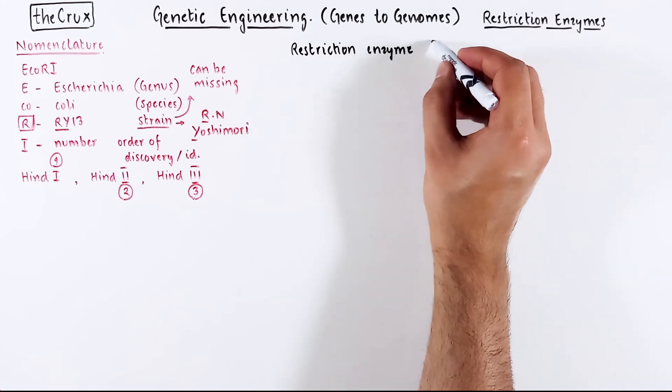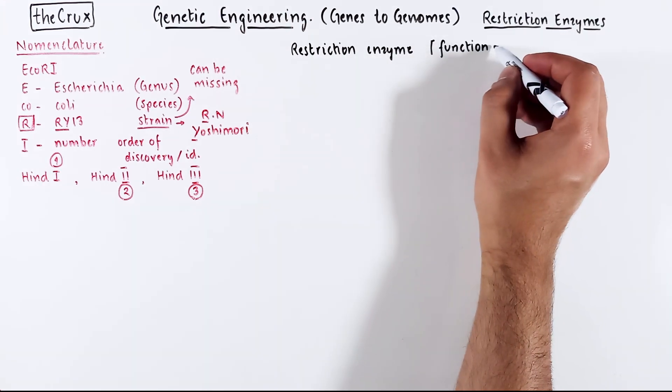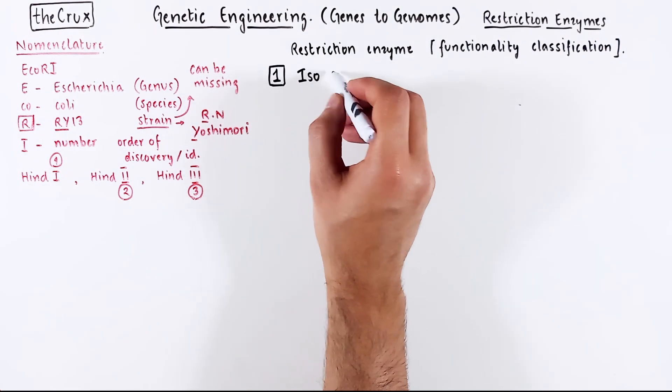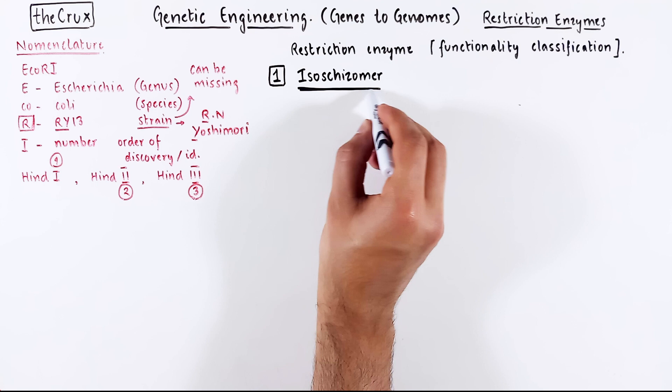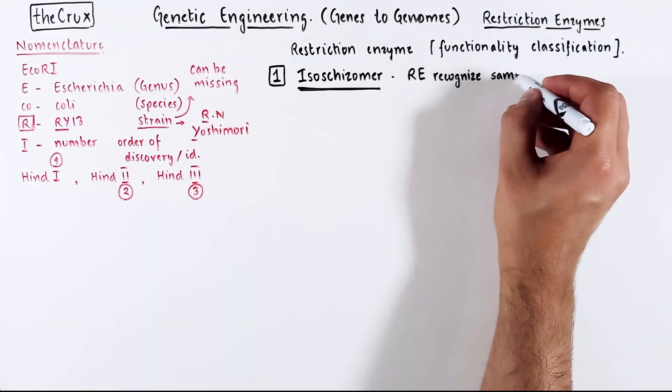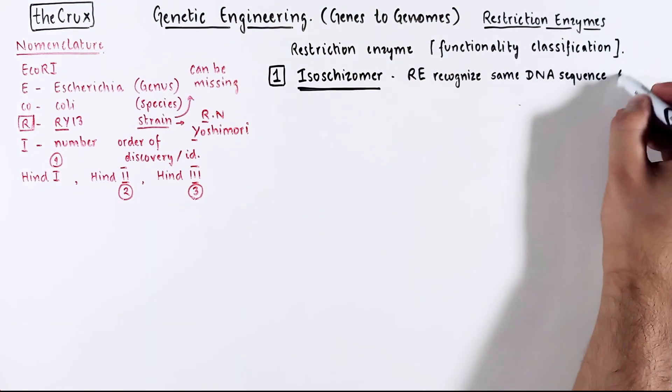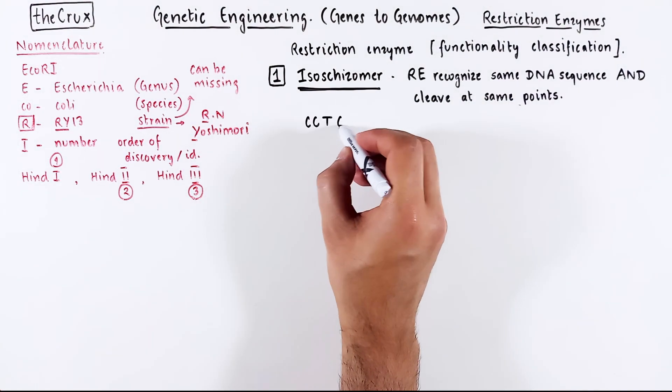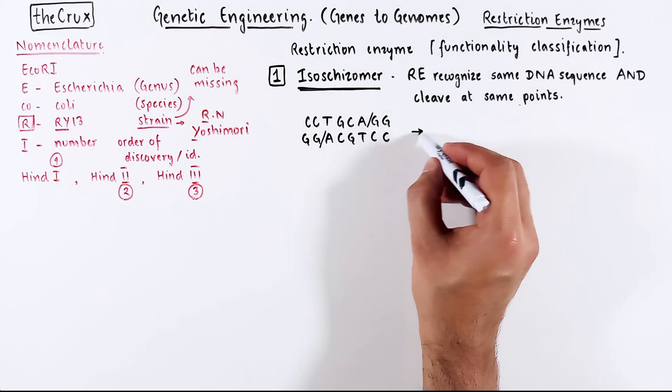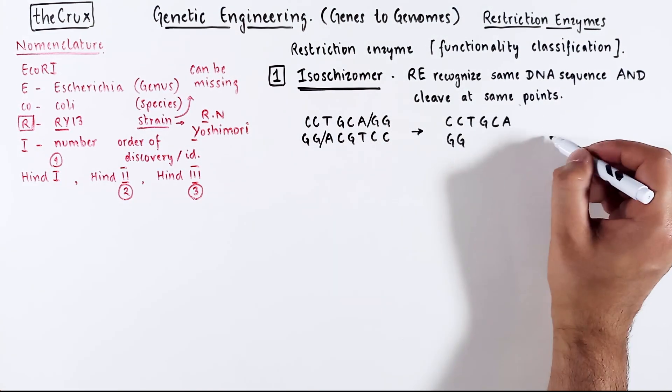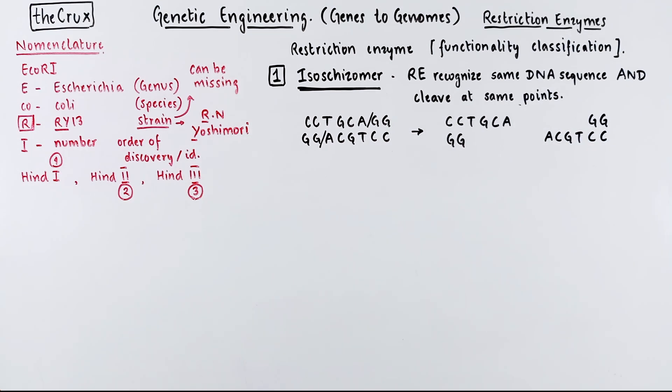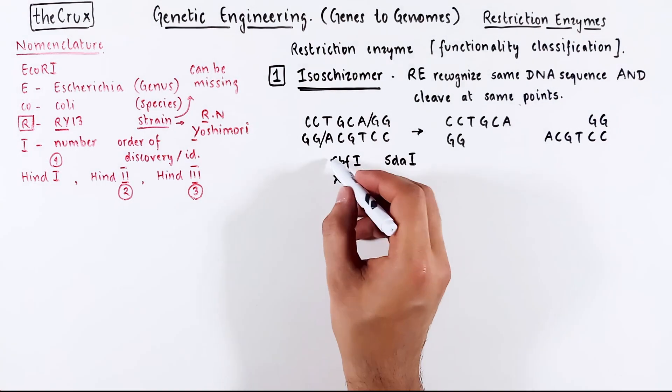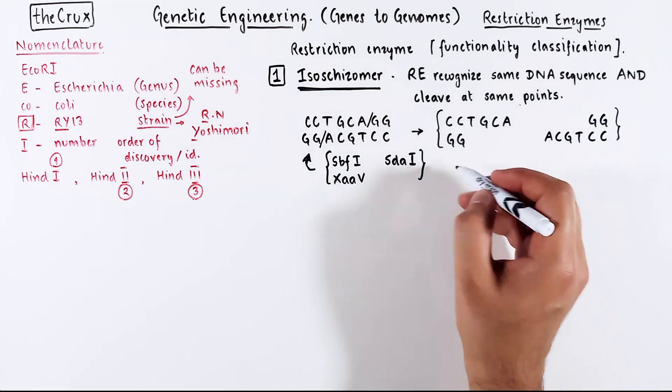Now that you understand how enzymes work, there is a functional categorization of restriction enzymes, and it is quite useful for practical reasons. The first bucket is a class called isochizomers. These are a set of restriction enzymes that recognize the same DNA sequences and cut the DNA at the same points. Take this palindromic sequence which is cut near GG, and here is the outcome of this cut. This exact sequence and this exact style of cut is made by these three different restriction enzymes. So we can call these three restriction enzymes isochizomers.